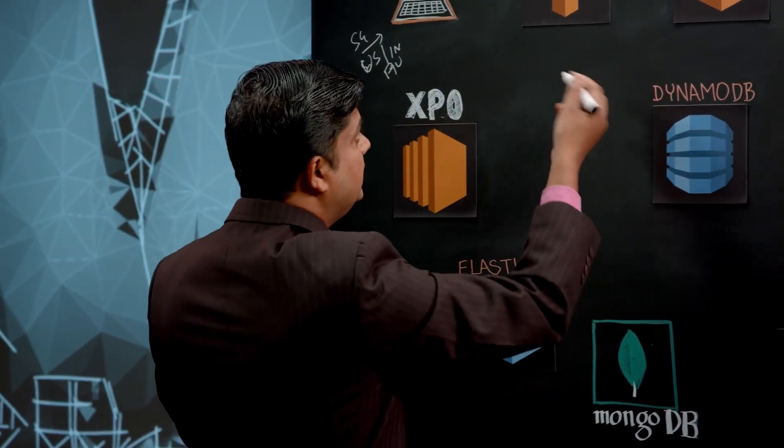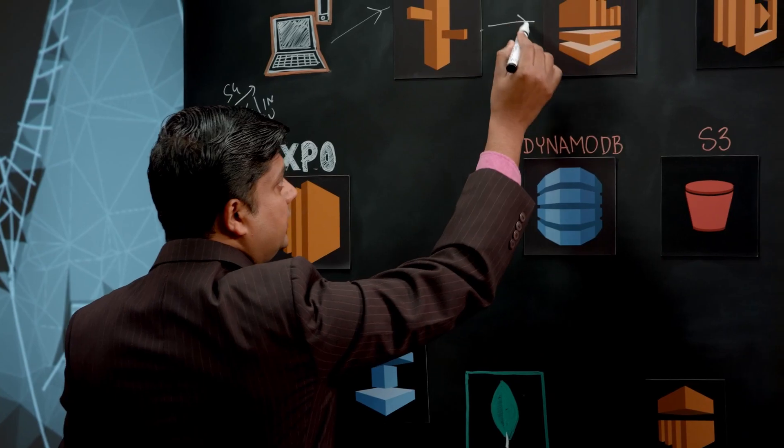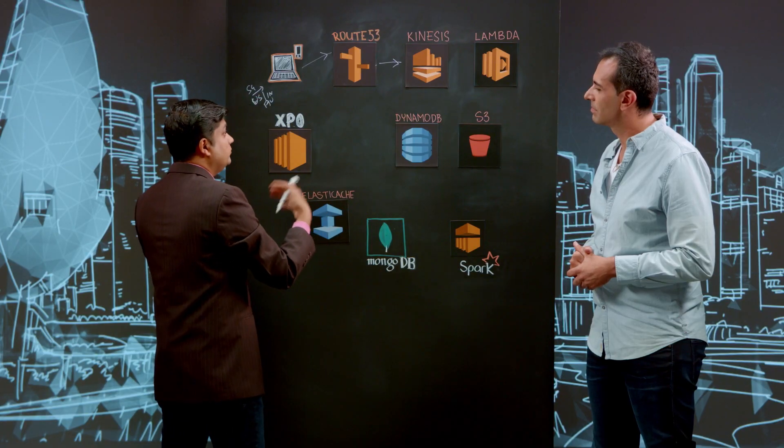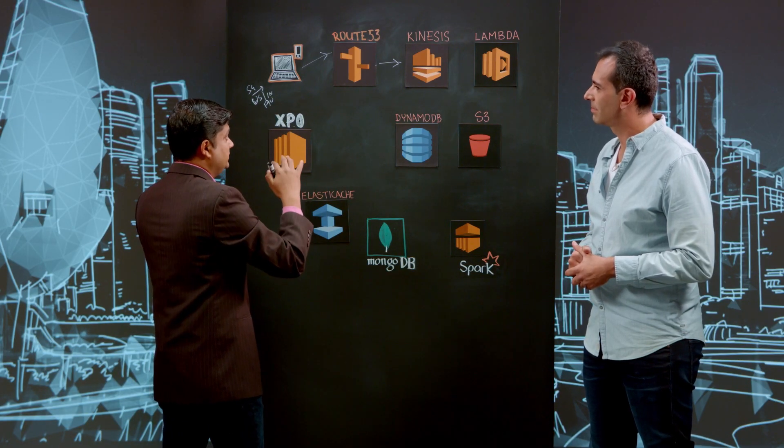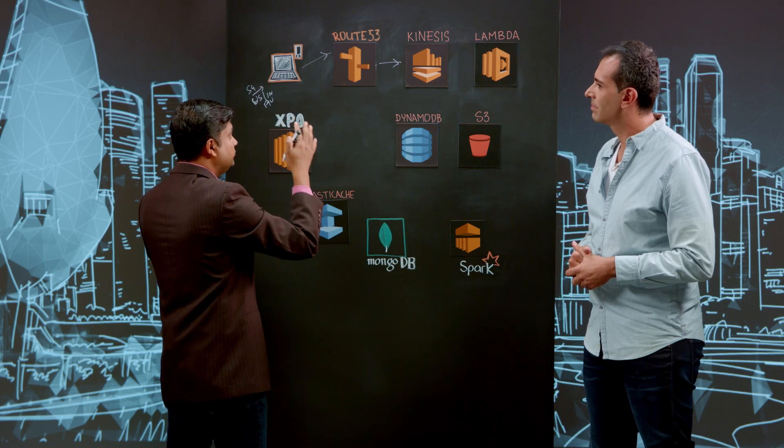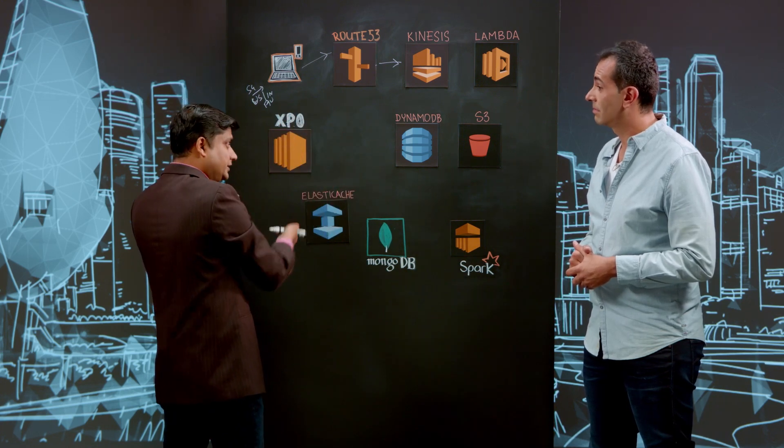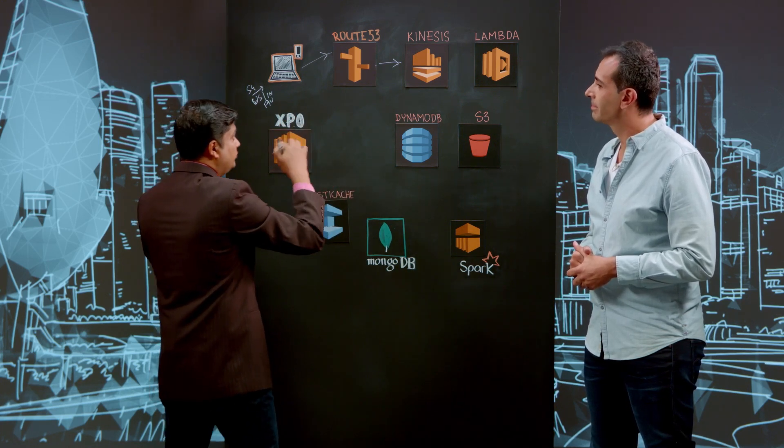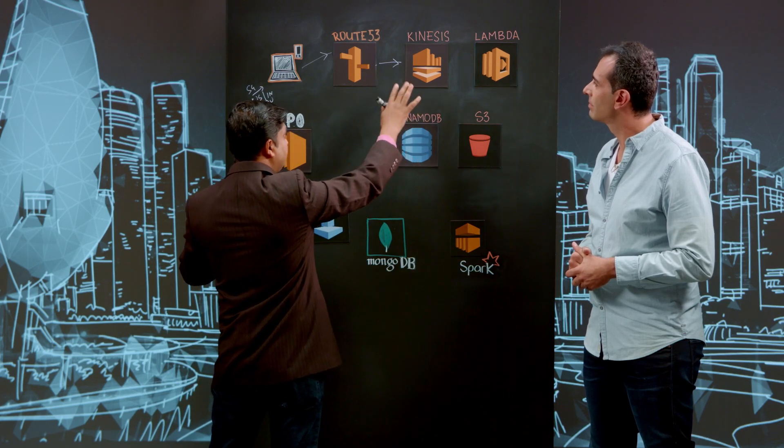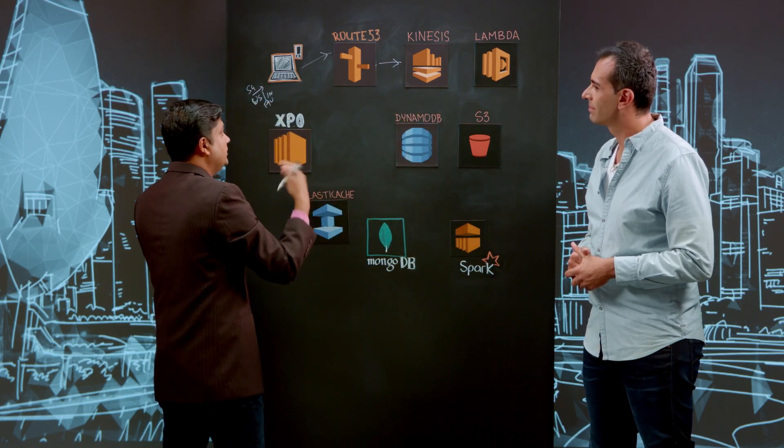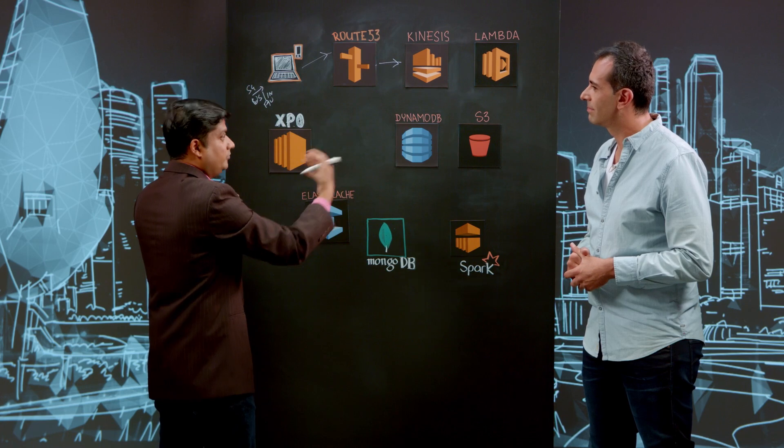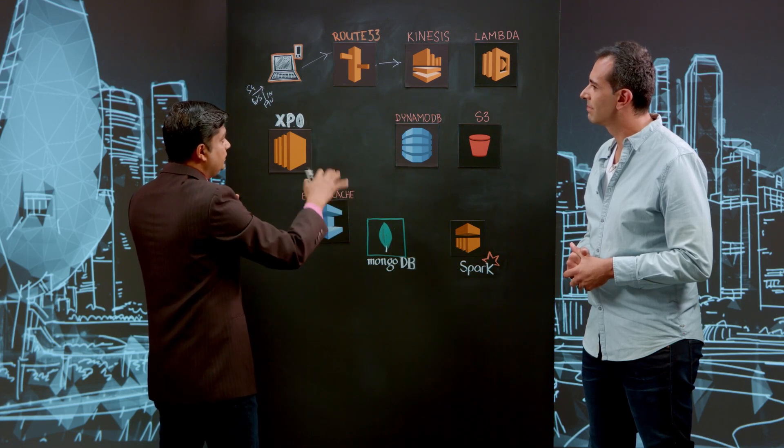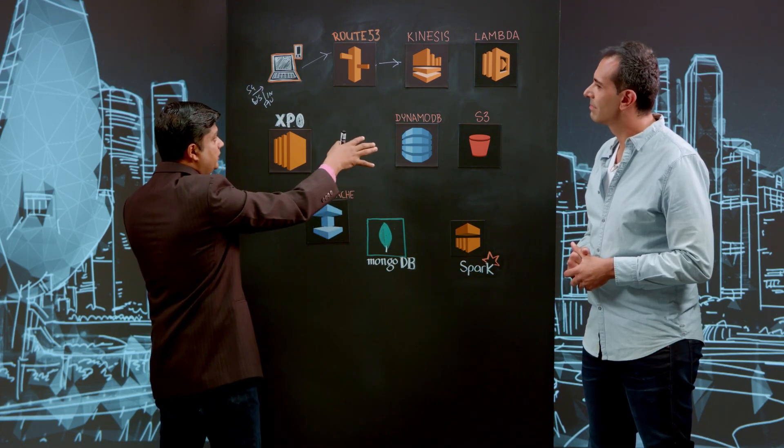Then we move the request to Kinesis. The reason for using Kinesis is we don't want data loss to happen, so Kinesis ensures that almost 99.9% of the time the data is there in the queue. We push everything to the queue itself and the data stays there based on your requirement - you can keep it for 24 hours or one week. For our case we're using it for one day, keeping the record there so that we can process it.